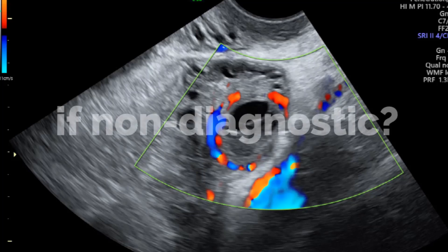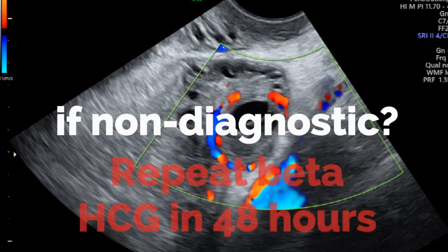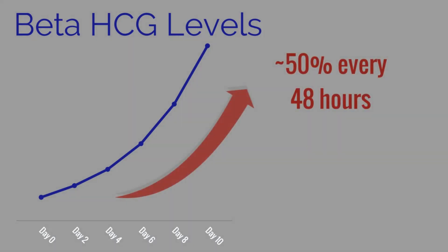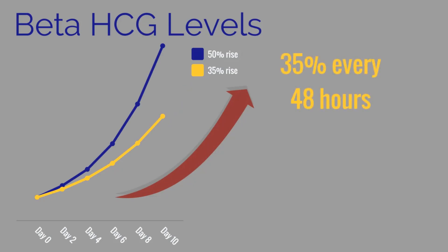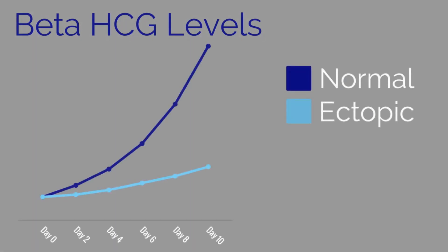What if the ultrasonography was non-diagnostic? If a patient is hemodynamically stable, it may be reasonable to repeat the beta-HCG level in 48 hours. In normal pregnancies, the rise is typically at least 50% every 48 hours, though studies demonstrate that even a 35% rise in 48 hours can be normal. In ectopic pregnancies, there can be lower than expected rises in beta-HCG secondary to failure of appropriate blastocyst implantation. However, ectopic pregnancies may have a normal rise in beta-HCG, and the diagnosis should be considered even with no masses on ultrasonography until an intrauterine pregnancy is diagnosed.